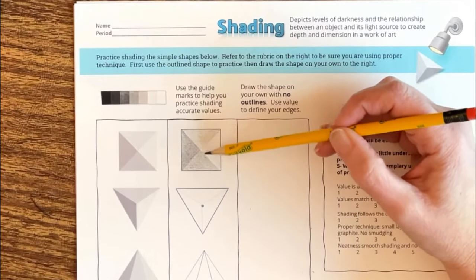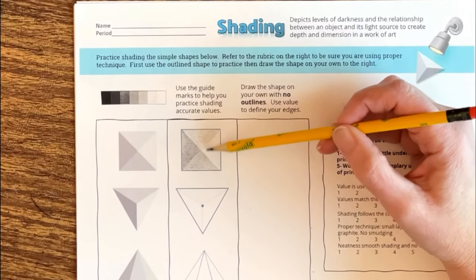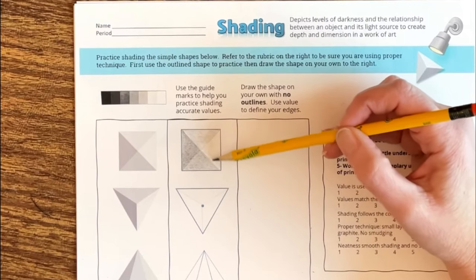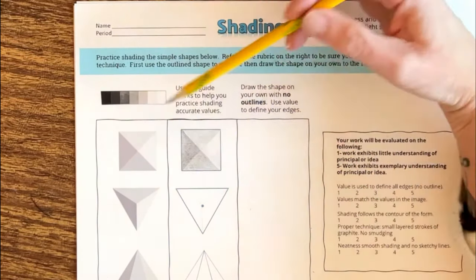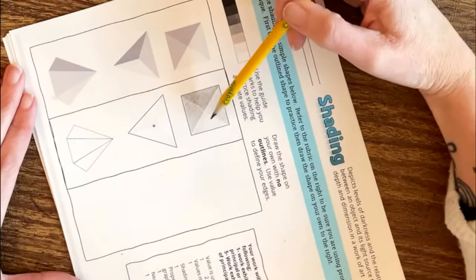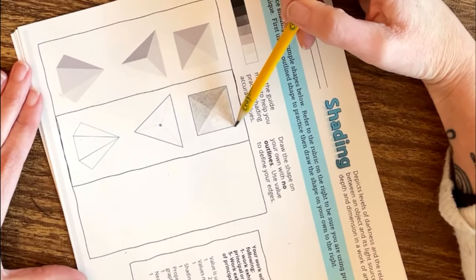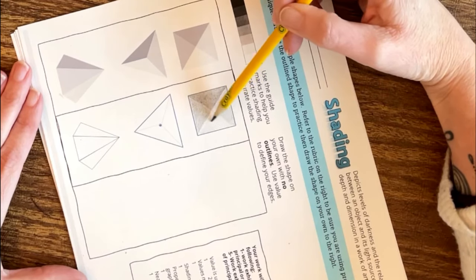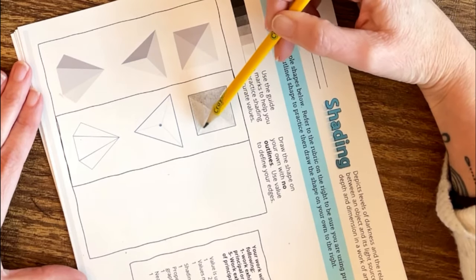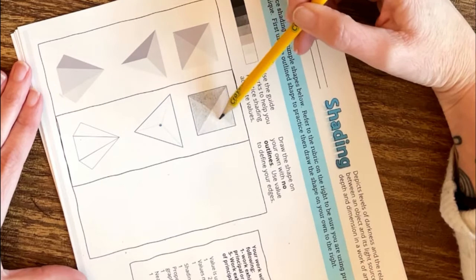Once you've practiced these very simple shapes with flat planes a few times then you're ready to move on to value transitions and start adding a new element of getting your values to fade from dark to light. Just wait until you're comfortable with these shapes and then you can move on.